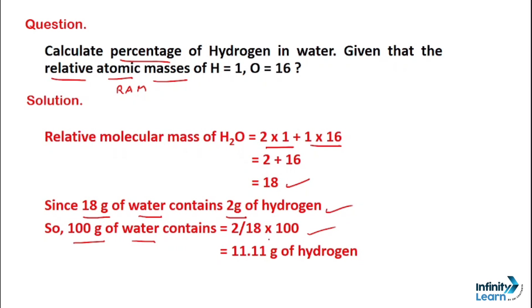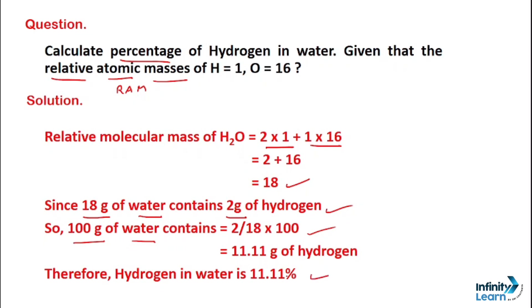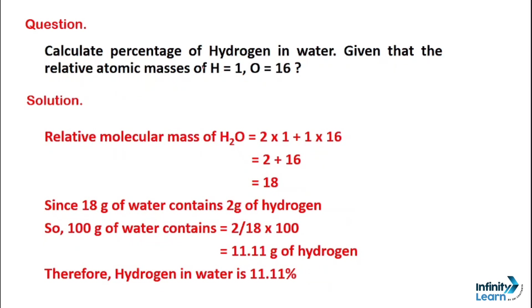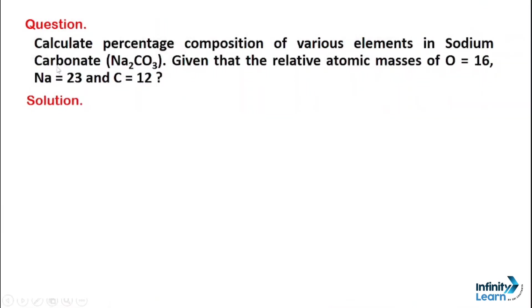So from this we get the percentage: approximately 11.11% of 100 grams of water is hydrogen. This was a fairly small question. Now let's move to a slightly bigger question where we need to calculate the composition of various elements.